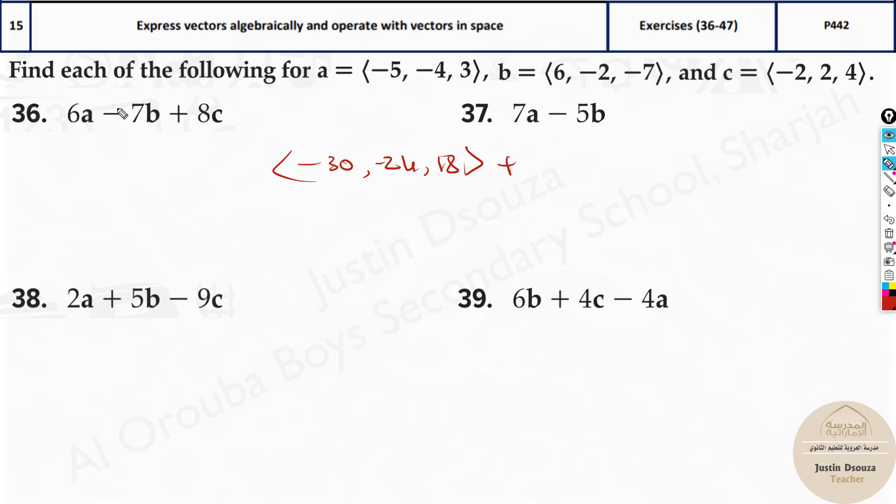Then plus, just multiply this minus sign inside, it will be minus 42, minus 14, minus, sorry, this minus and minus becomes plus, even over here, minus and minus becomes plus 49.